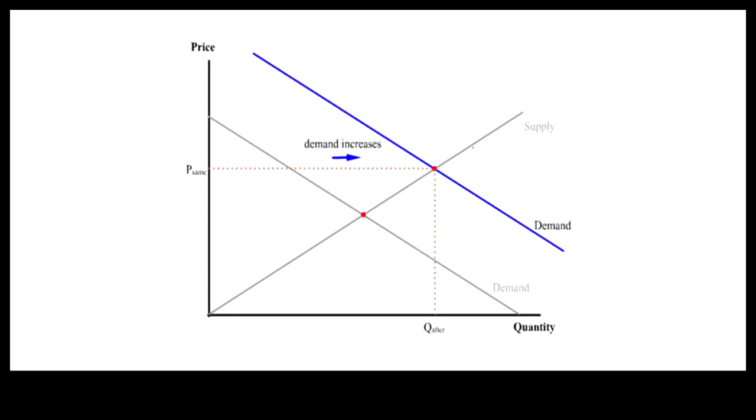When more is bought at the same price, demand, rather than quantity demanded, is said to have increased. When less is bought at the same price, demand, rather than quantity demanded, is said to have decreased.